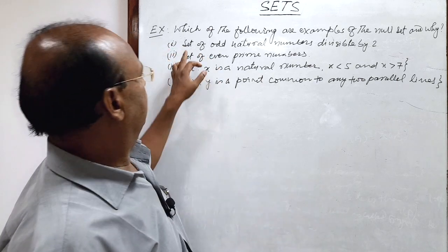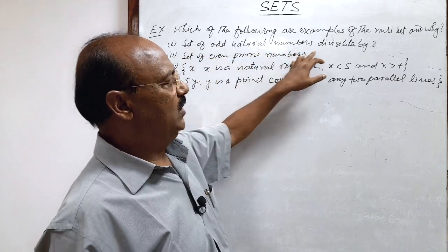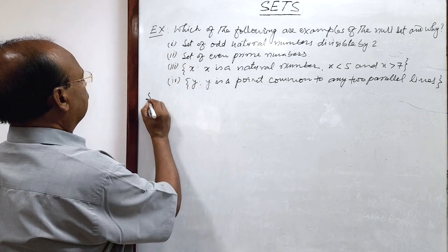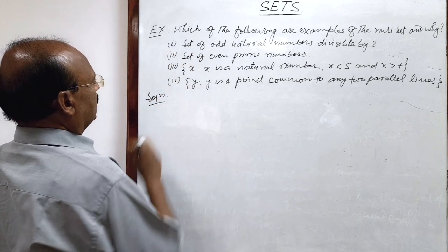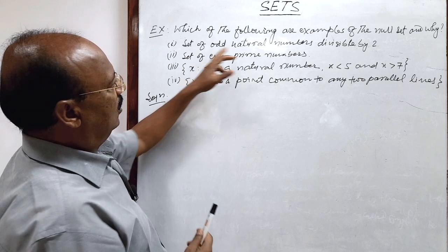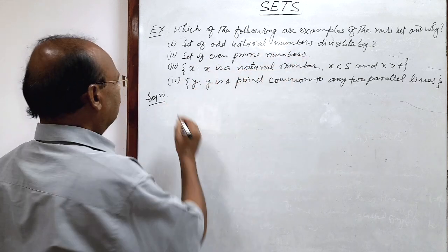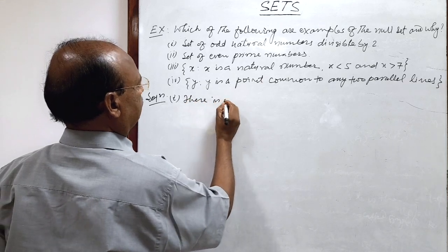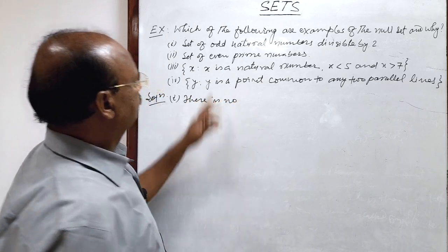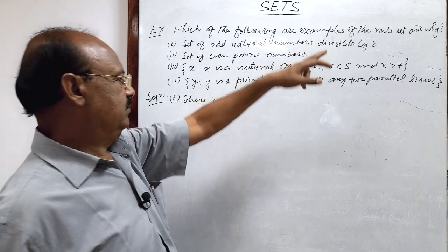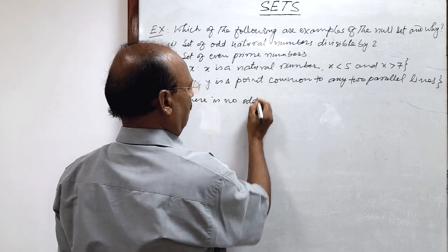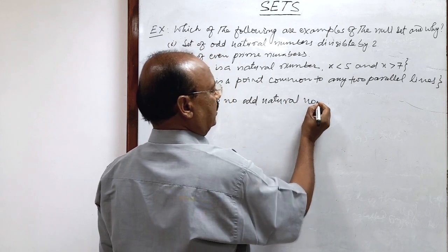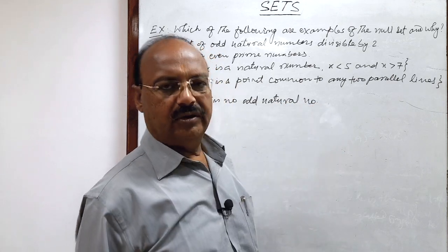So you see first question, set of odd natural numbers divisible by 2. Set of odd natural numbers divisible by 2. So we know that there is no odd natural number which is divisible by 2. There is no odd natural number, so that is why it is called odd, isn't it?